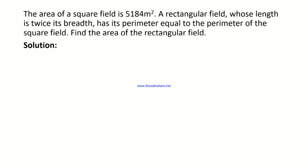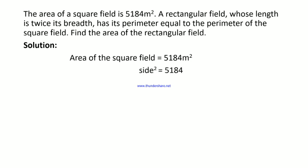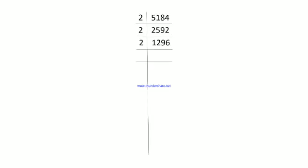Next question: The area of a square field is 5184 m². A rectangular field whose length is twice its breadth has its perimeter equal to the perimeter of the square field. Find the area of the rectangular field. The area of a square equals side², so side² = 5184, meaning side = √5184. We will find this by prime factorization.